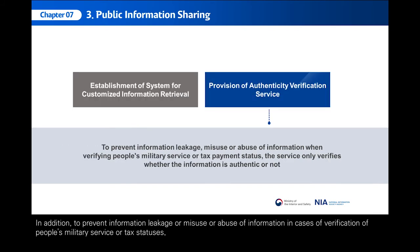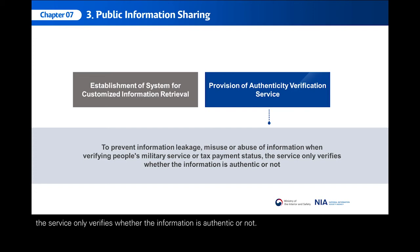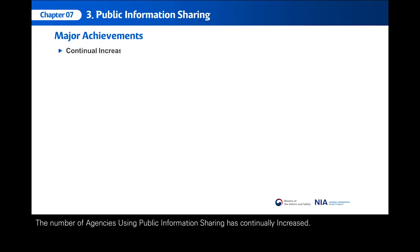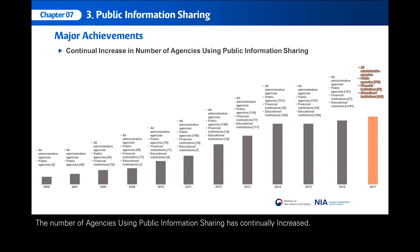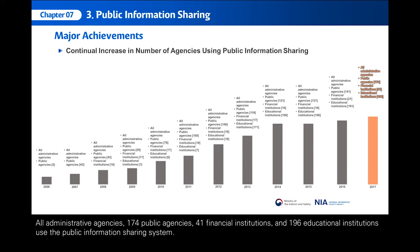To prevent information leakage or misuse in cases of verification of people's military service or tax statuses, the service only verifies whether the information is authentic or not. The number of agencies using public information sharing has continually increased. All administrative agencies, 174 public agencies, 41 financial institutions, and 196 educational institutions use the public information sharing system.